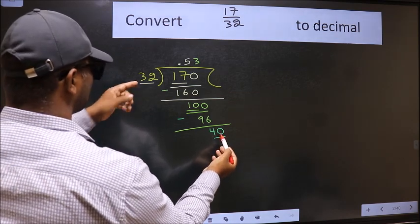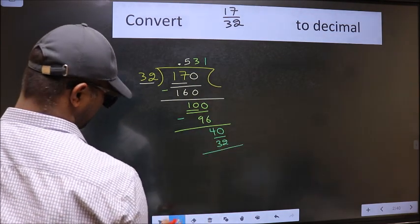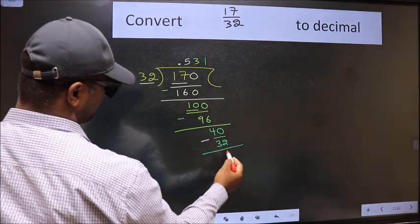A number close to 40 in the 32 table is 32 times 1, which is 32. Now we should subtract. We get 8.